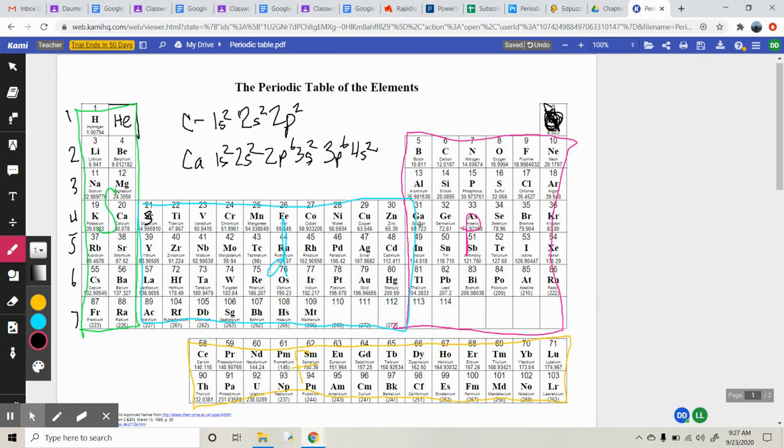Then we'll go 3D10. We'll pop back out here and it'll be 4P6 again. And then 5S2, 4D10, 5P6, 6S2, and then we end up going down here into our 4F region. Remember, this whole lanthanide and actinide series is actually stuck in between here. We just take it out so that the periodic tables and so on.